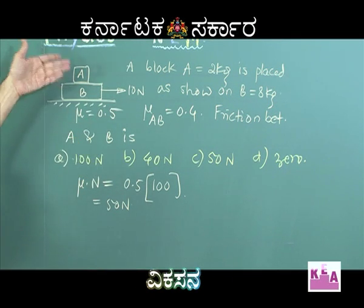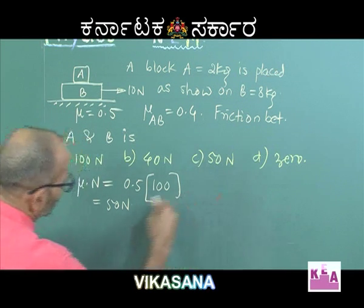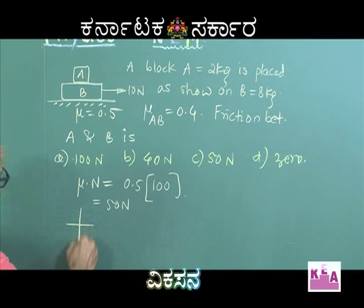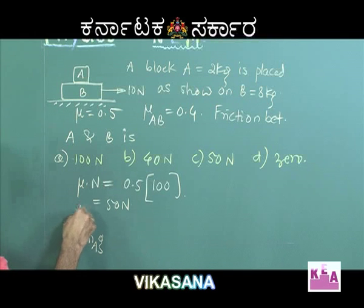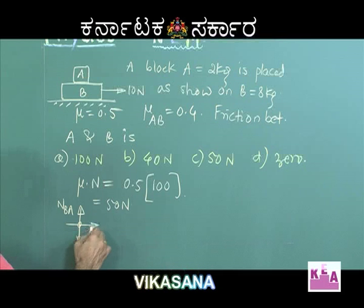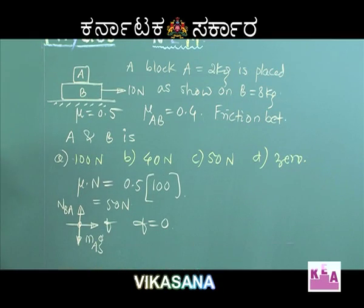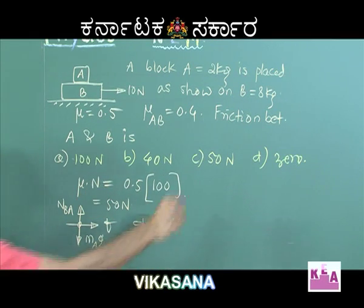If A does not move, how can there be any force acting on A? Looking at the free body diagram of A: its weight acts vertically downward, and the normal reaction of B on A acts vertically upward. If there were a horizontal frictional force on A, then A would have to move — but we have established that A cannot move. Therefore the friction on A must be zero, and the correct option is D.